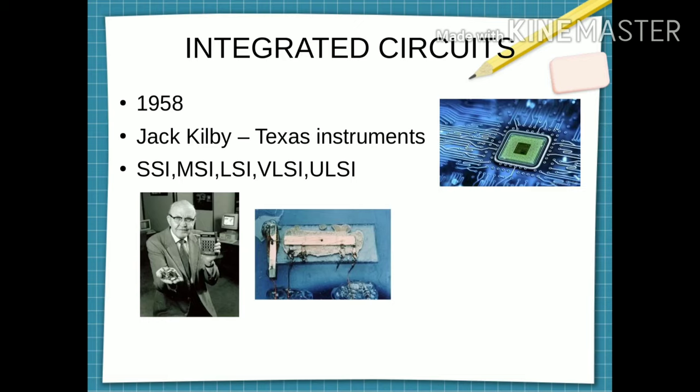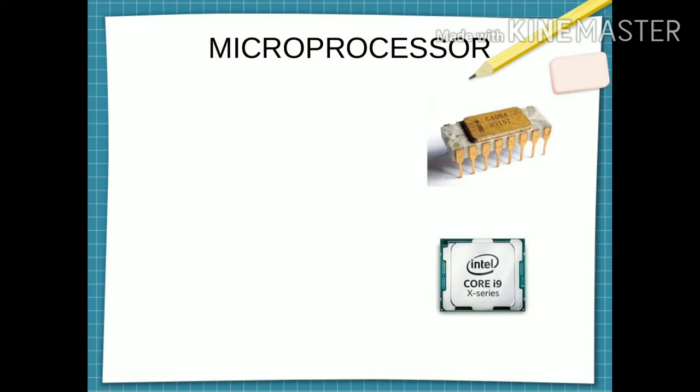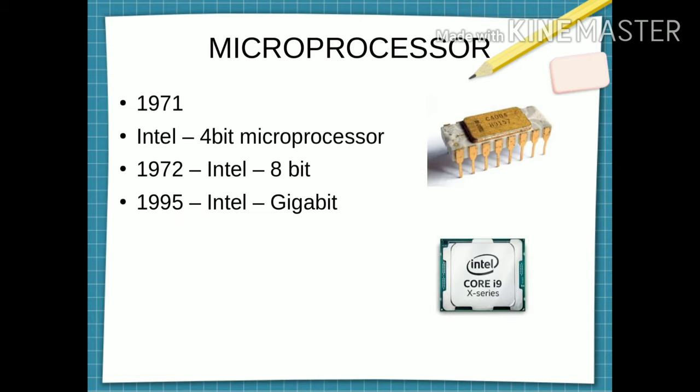Following the development in the integrated circuits, microprocessors became reality. The first microprocessor is shown on the right side top. It was developed in 1971 by Intel. It is 4-bit microprocessor. Then in 1972, Intel brought 8-bit microprocessor. Then 1995, Intel Gigabit came. And now Intel has Core i9-X series.